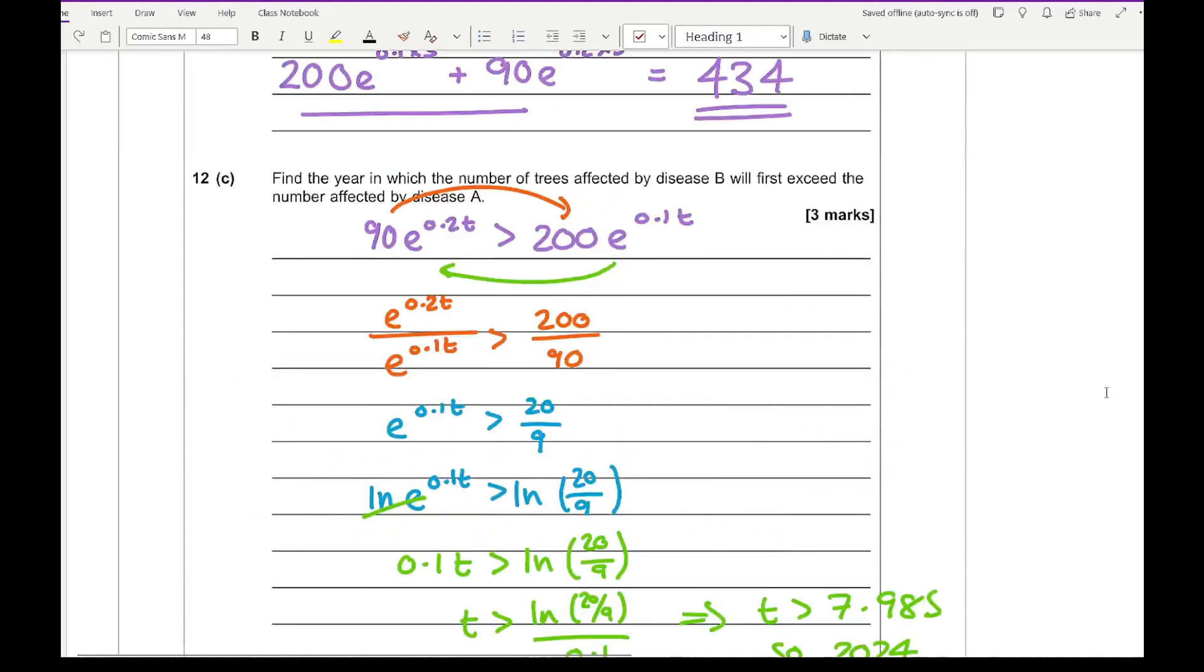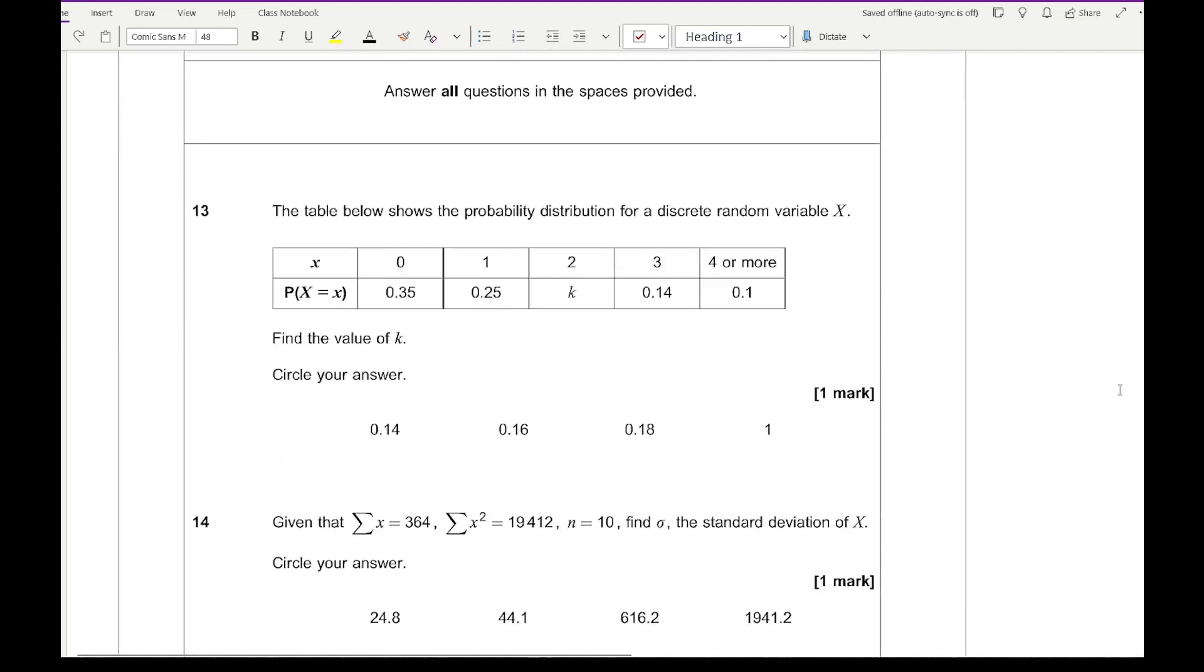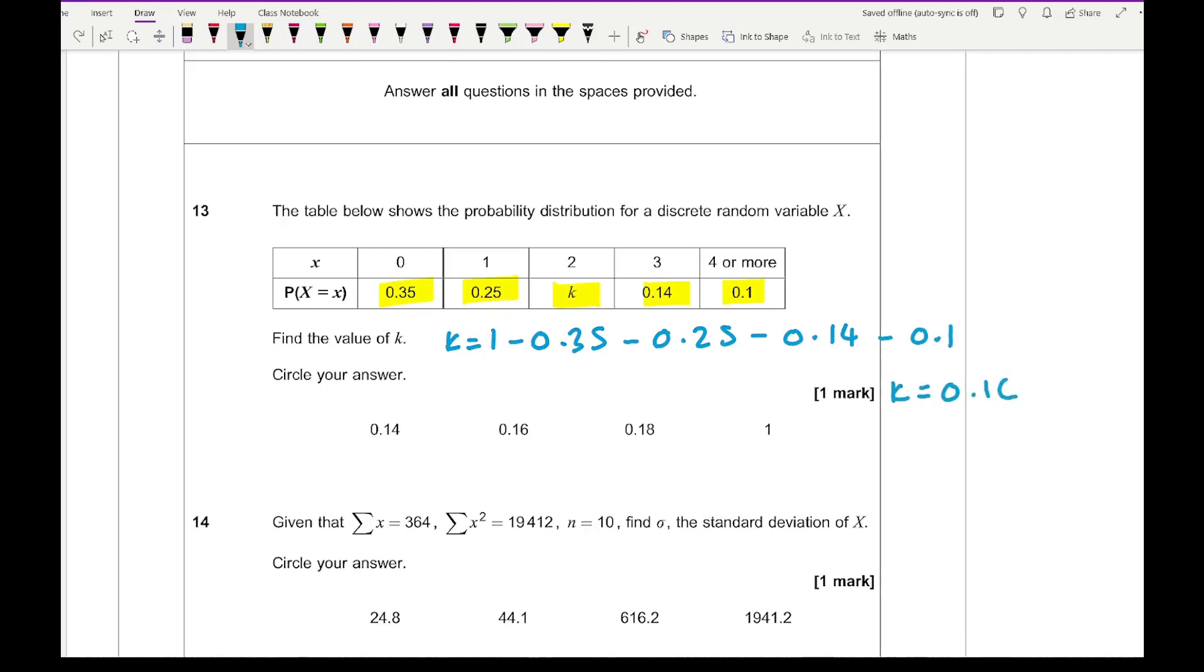Looking at question 1, which relates to probability distribution, the table shows a probability distribution for a discrete random variable x. Find the value of k. The key principle is that all these probabilities need to add up to 1. On the calculator, k equals 1 minus 0.35 minus 0.25 minus 0.14 minus 0.1, we get k equals 0.16, which is our second option.